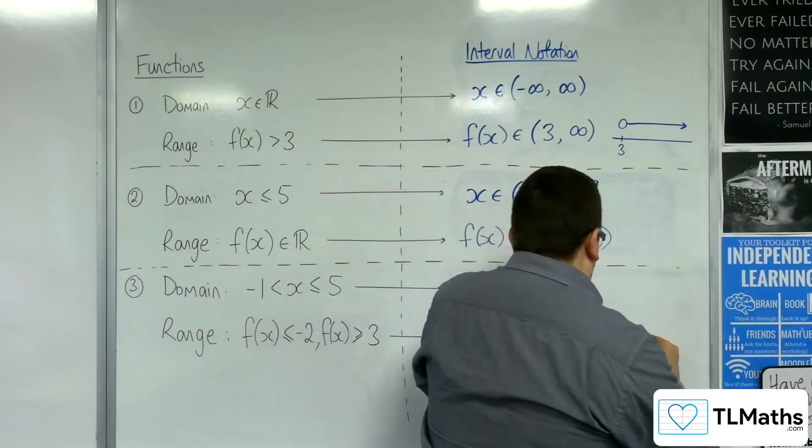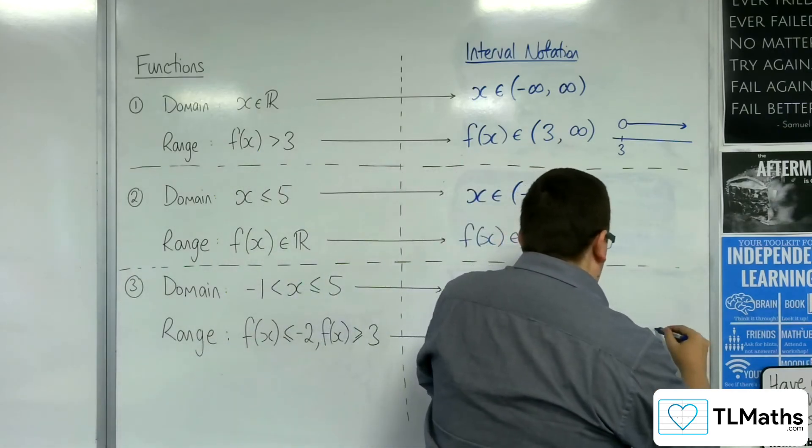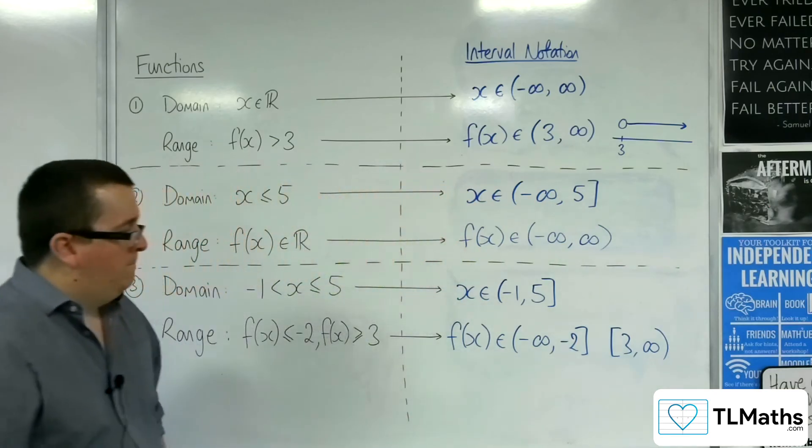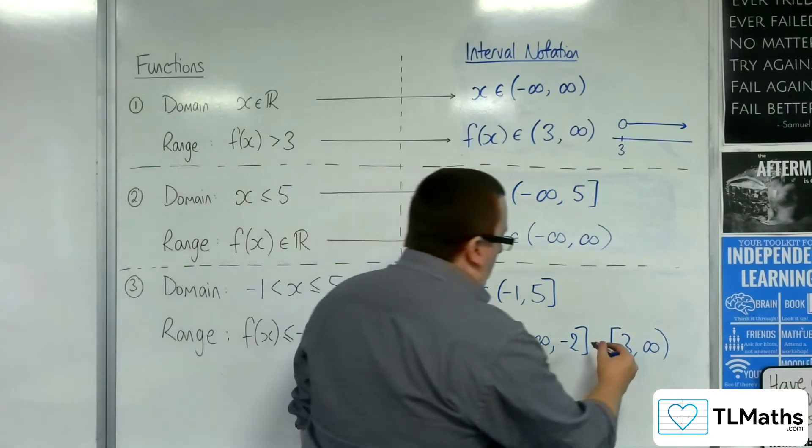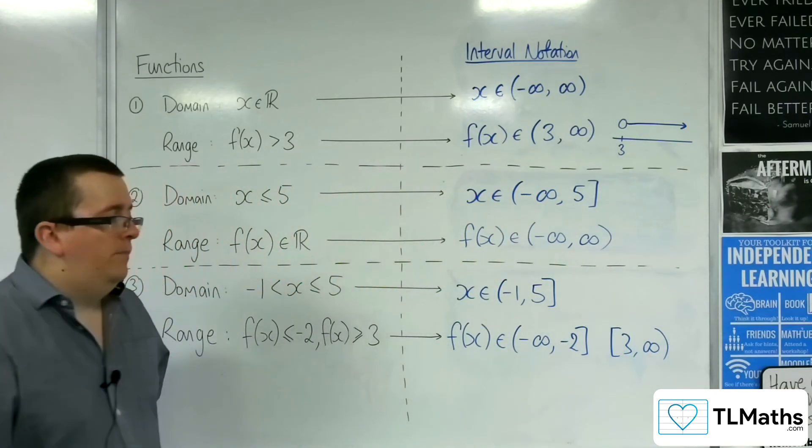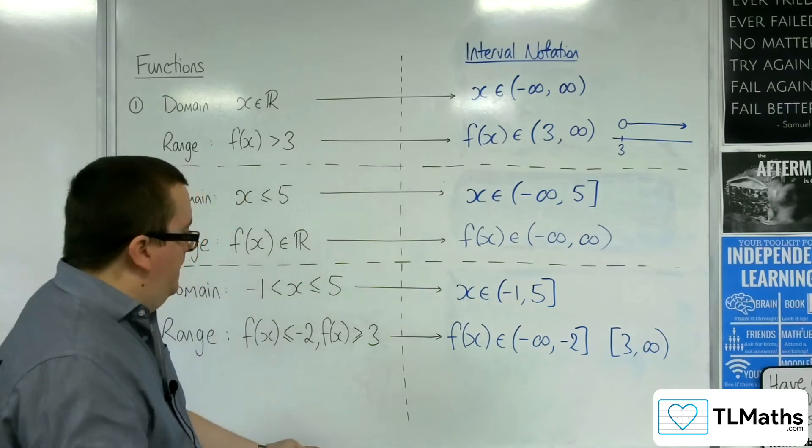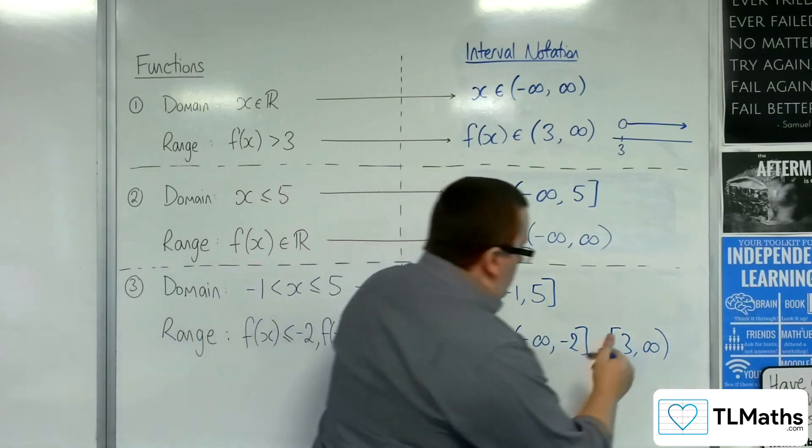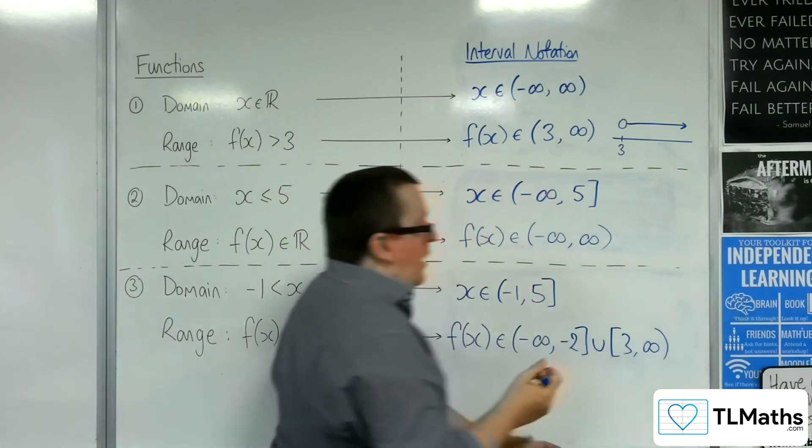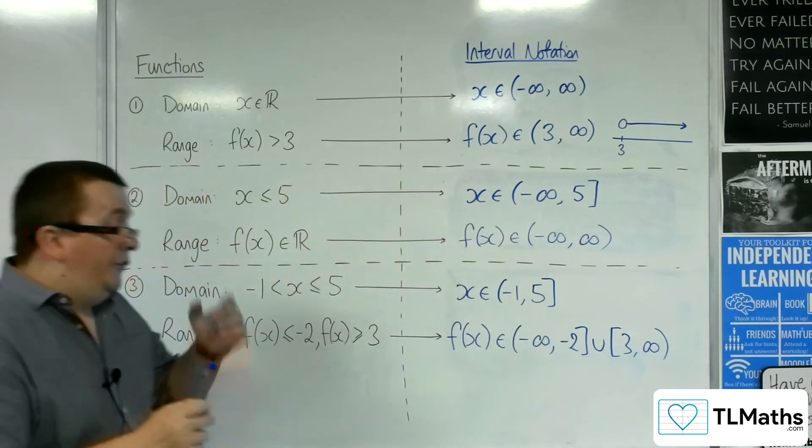And I've got the greater than or equal to 3. So, including the 3 and up to positive infinity with a curved bracket. But I don't want the intersection of those, because those two regions don't overlap, and so that would be empty.